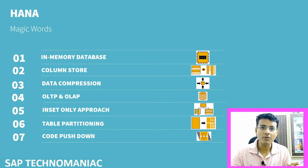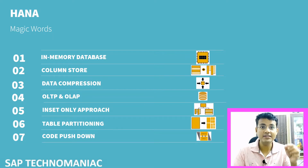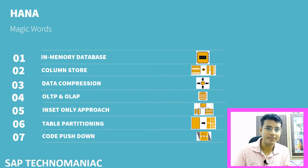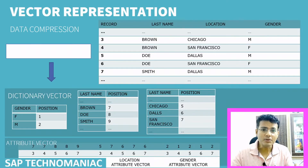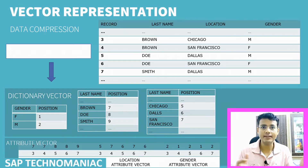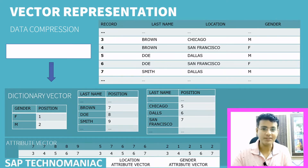In my last video, we discussed row store and column store. In this video, we will discuss data compression — how SAP does data compression in SAP HANA. SAP uses a lot of techniques to compress data, and we will see one example of how SAP does data compression.